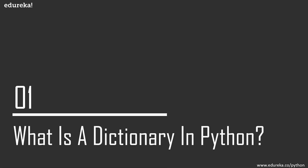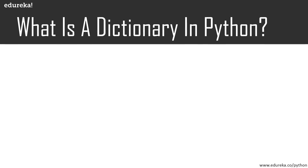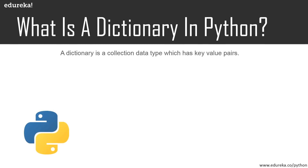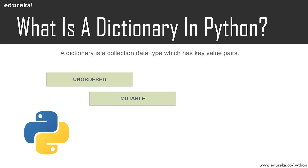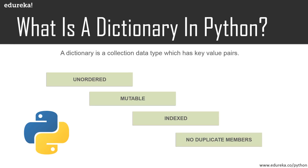Let's try to understand what is a dictionary in Python. It is a collection data type just like a set or a list, but there are certain features that make dictionary unique. First of all, it is unordered and we can change values in a dictionary since it is mutable. Also, it has key-value pairs, which is like a map that we have in other programming languages. It is indexed as well since the keys are distinct and can be used as indexes. A dictionary does not have any duplicate members.